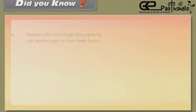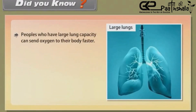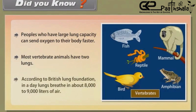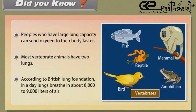Did you know? People who have large lung capacity can send oxygen to their body faster. Most vertebrate animals have two lungs. According to the British Lung Foundation, in a day, the lungs breathe in about 8,000 to 9,000 liters of air.